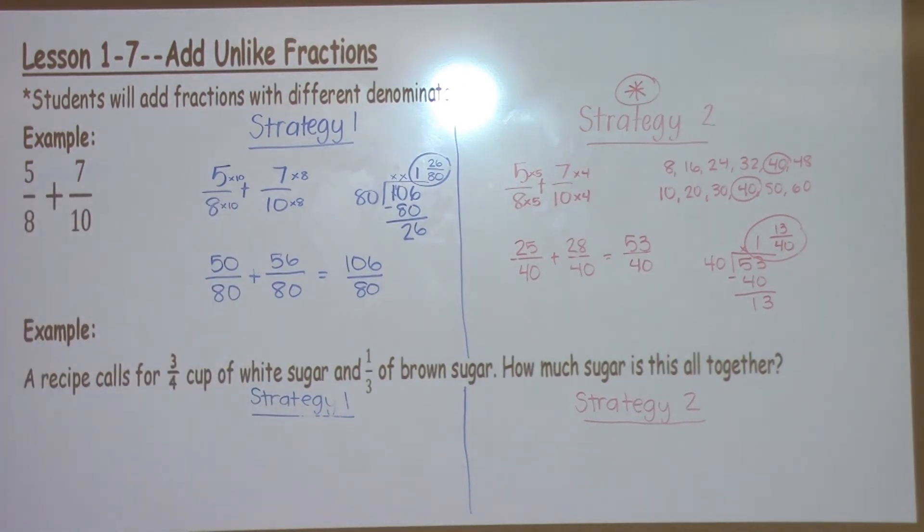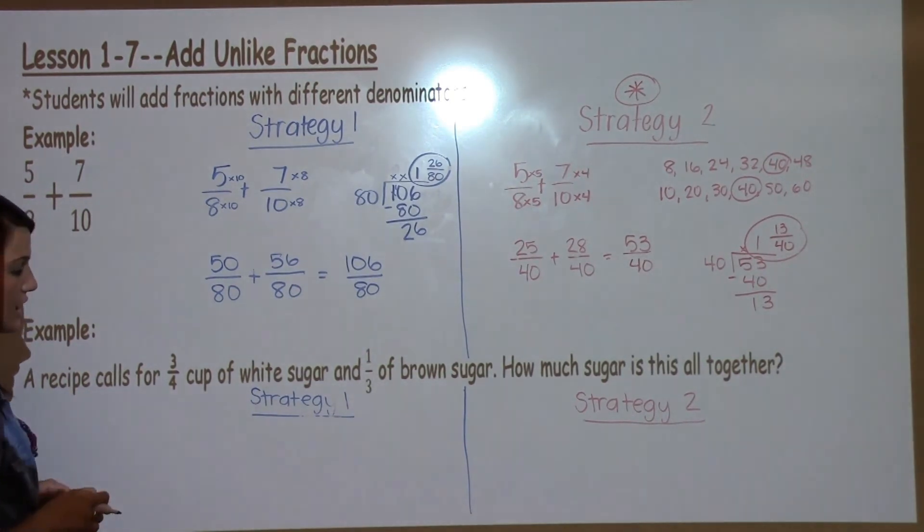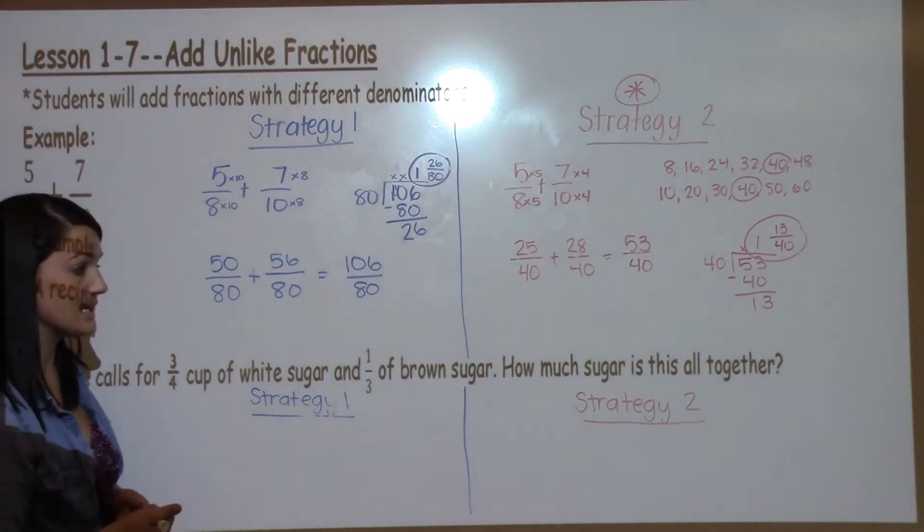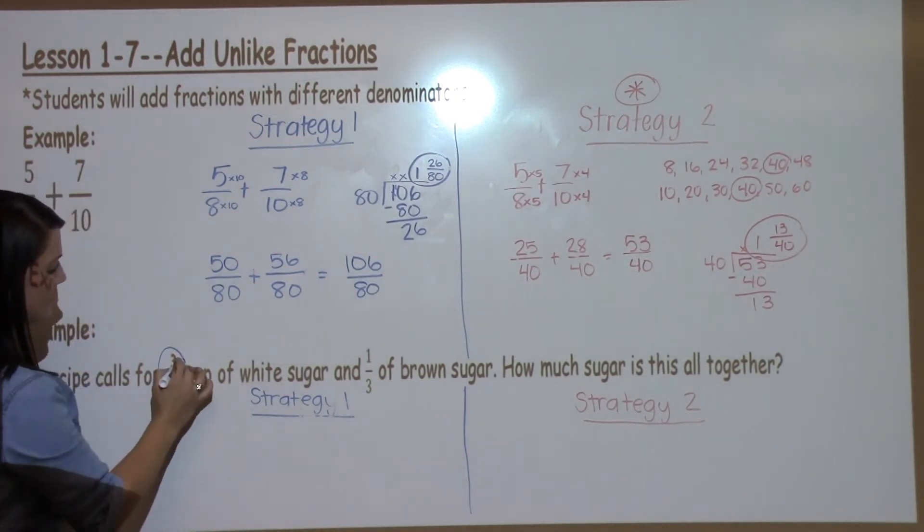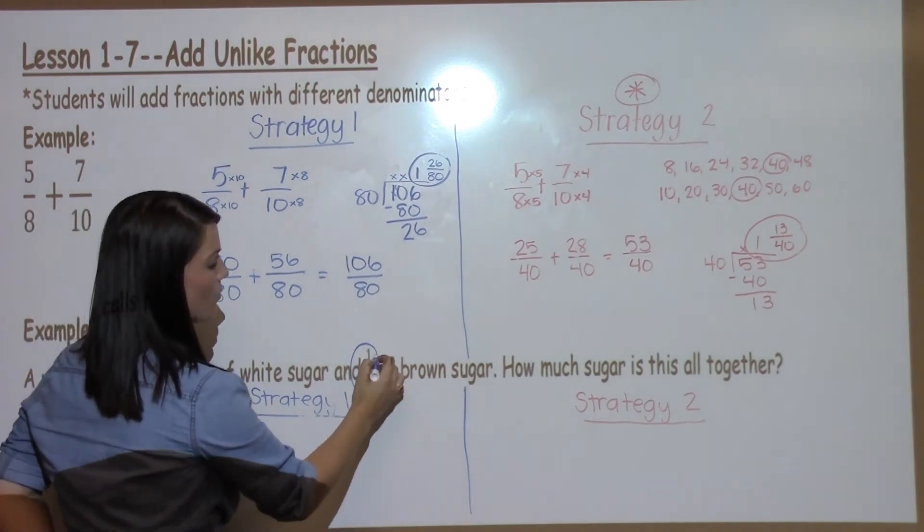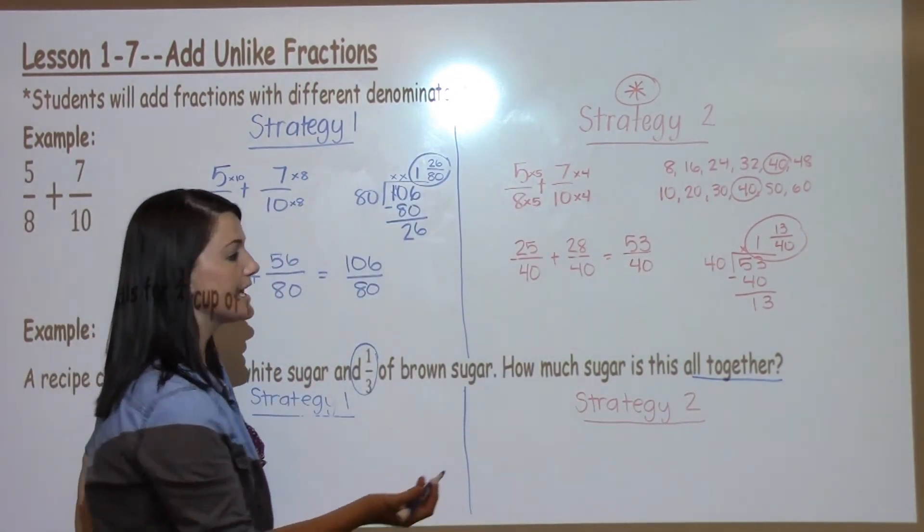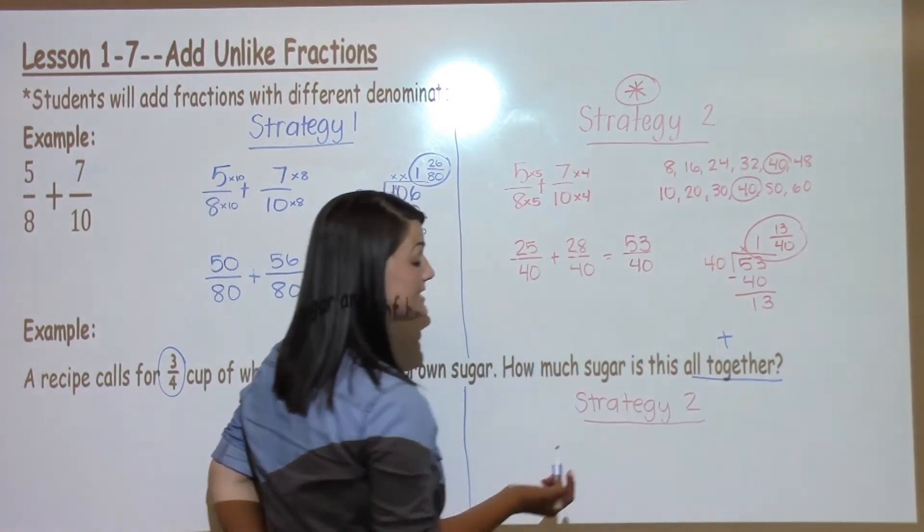Now we're going to move down to the other example, which is just a word problem. It says, a recipe calls for 3/4 cup of white sugar and 1/3 cup of brown sugar. How much sugar is there all together? So, I've got 3/4 and 1/3. However, the words all together tell me to put them together or to add.